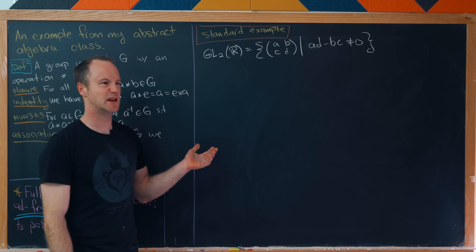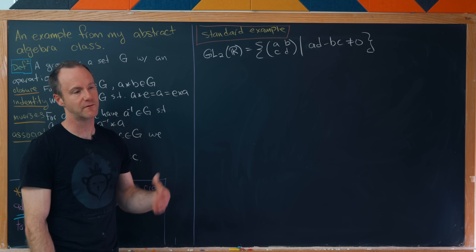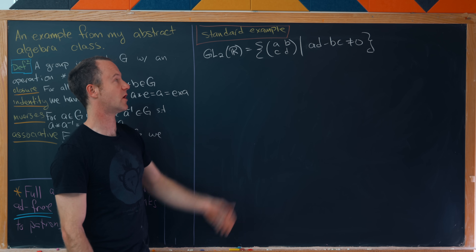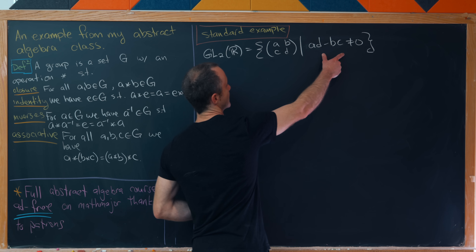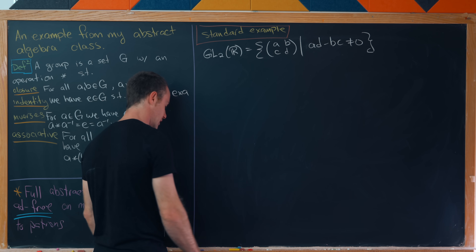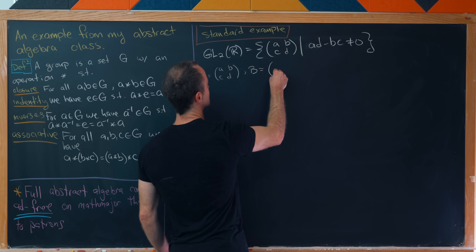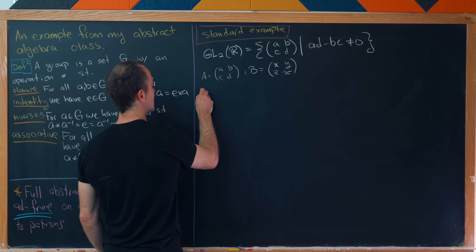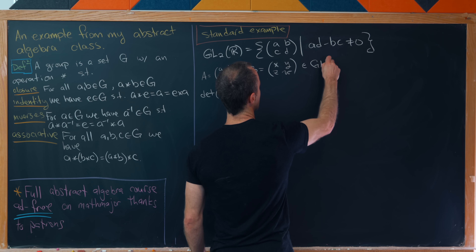A pretty classic example given in abstract algebra classes is a group of matrices, because students have generally seen elementary linear algebra beforehand. GL2(R) is the group of all two by two invertible matrices — and a matrix being invertible is the same as its determinant being non-zero. Recall that AD minus BC is the determinant of this matrix. So let's set A equal to the matrix [a, b, c, d] and B equal to [x, y, z, w], and calculate the determinant of A times B, assuming both are inside our group.